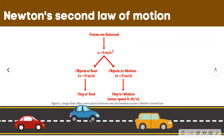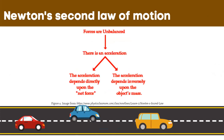Newton's second law of motion pertains to the behavior of objects for which all existing forces are not balanced. The second law states that the acceleration of an object is dependent upon two variables: the net force acting upon the object and the mass of the object. The acceleration depends directly upon the net force and inversely upon the mass. As force increases, acceleration increases; as mass increases, acceleration decreases.